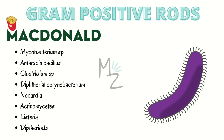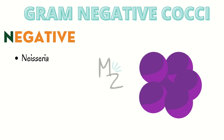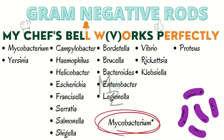Now let's talk about gram negative cocci. Since it is negative, the word 'negative' has an N in it, so N is for Neisseria — in some places also pronounced as Neisseria. Now we are going to talk about gram negative rods, and there are many rods.